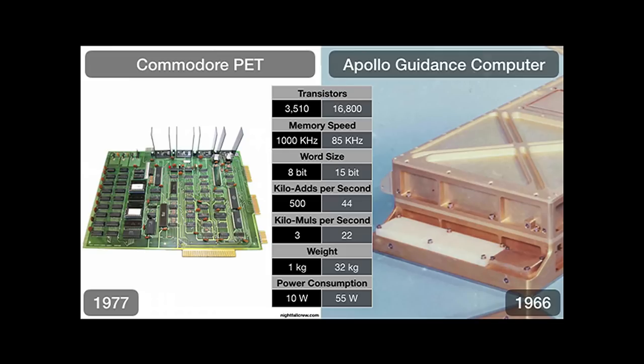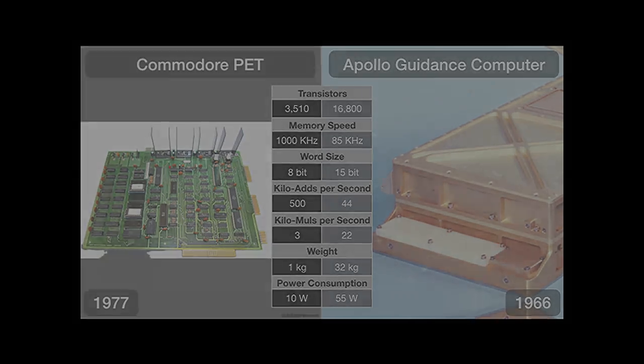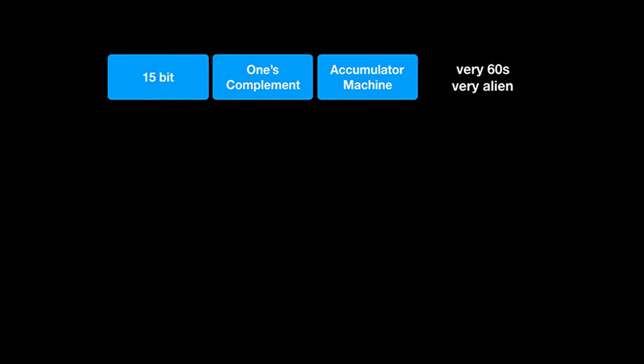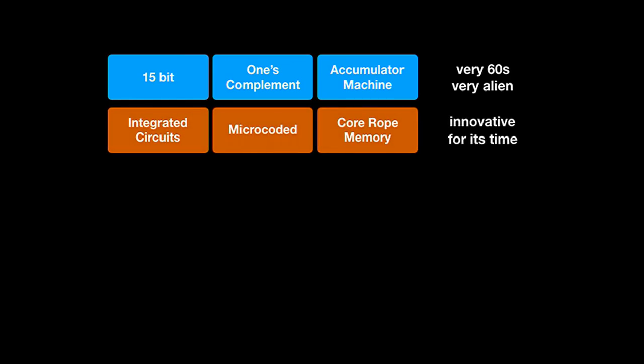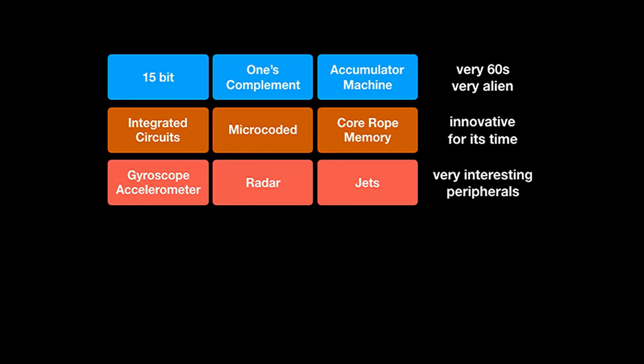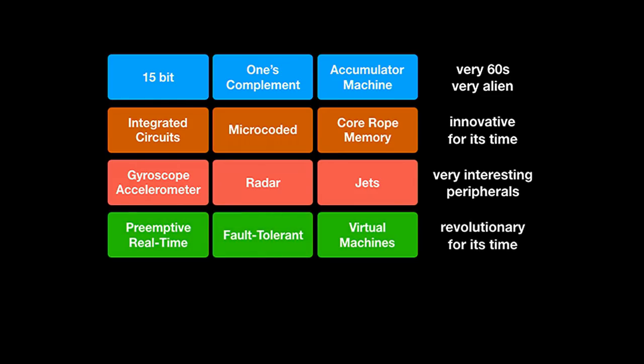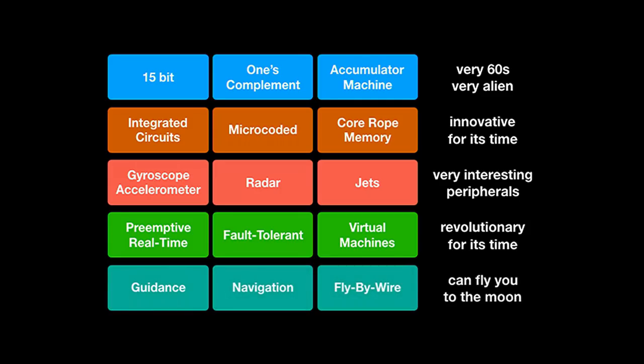There are many reasons that make the AGC especially interesting. The architecture is very 1960s and feels very alien to us today. The hardware is very innovative for its time. It has some very interesting and unusual peripherals. Its operating system was revolutionary for its time, and the mission software has all the bits needed, with the right hardware attached, to fly you to the moon.